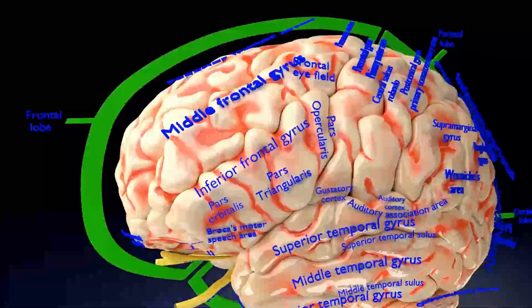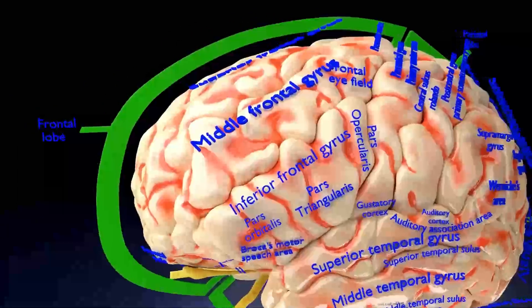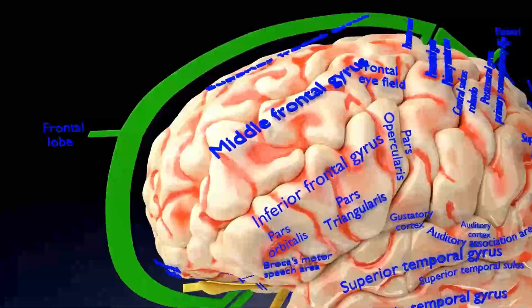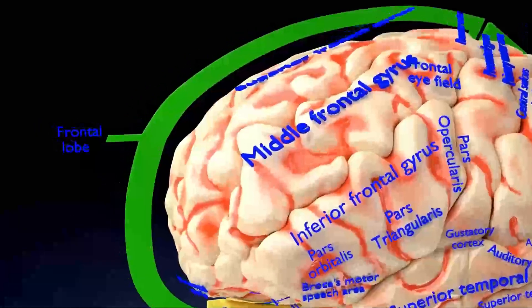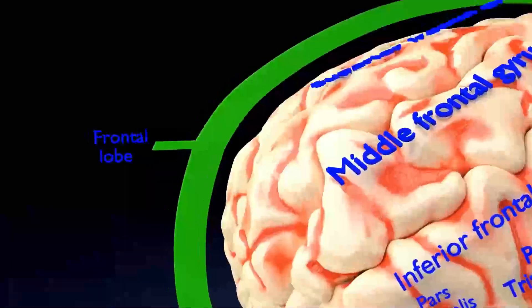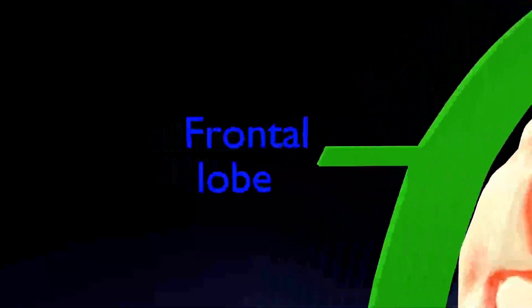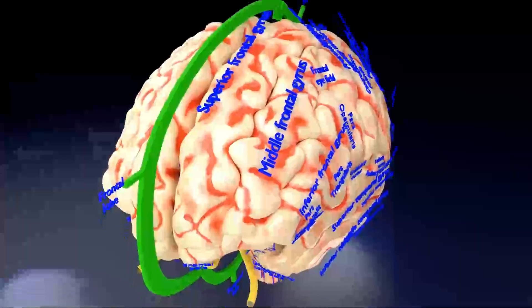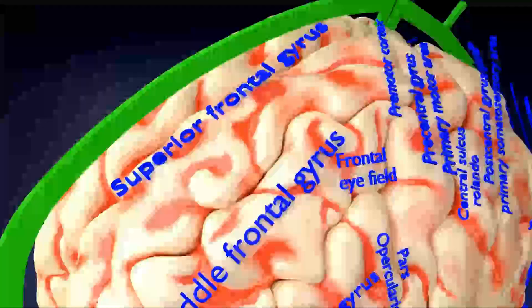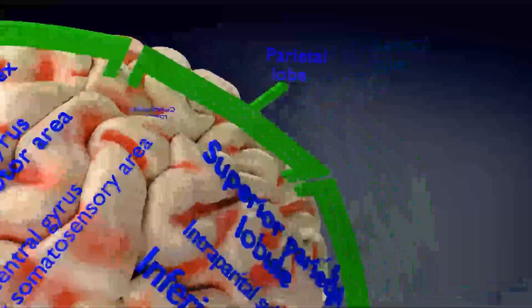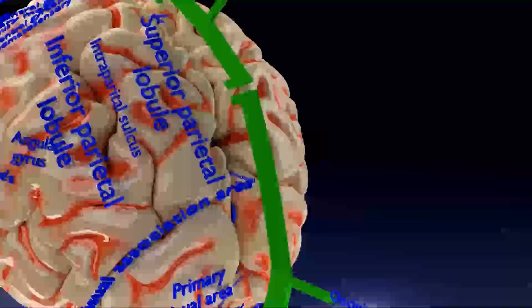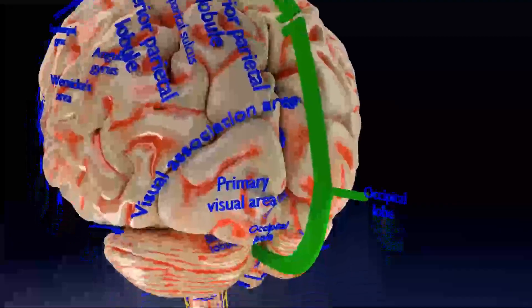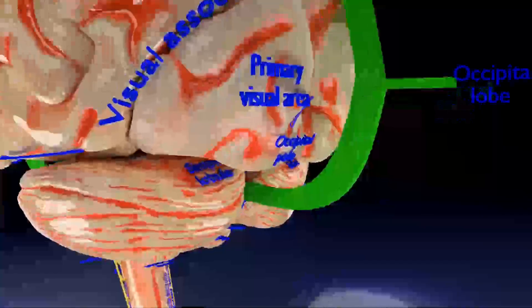The longitudinal fissure partially separates the cerebral hemispheres. Each cerebral hemisphere is divided into four lobes: the frontal lobe, the parietal lobe, the temporal lobe, and the occipital lobe. The central sulcus, or fissure of Rolando, separates the frontal and parietal lobes, and the deeper lateral sulcus, or fissure of Silvius, forms the boundary between the temporal lobe and the frontal and parietal lobes.